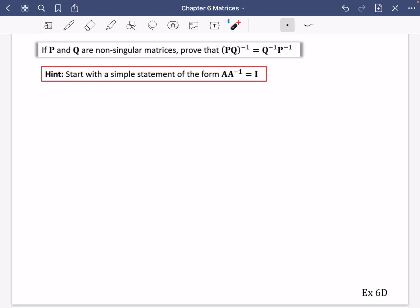So always for these kinds of things, start off with a really simple form, a simple statement of the form A multiplied by A inverse equals I. So for this one, that simple statement that we would have to begin with would be PQ multiplied by PQ inverse is equal to I. That's our simple statement to begin with. Now, what this really means, this means P multiplied by Q multiplied by PQ inverse is equal to I. That's really what this expression is actually saying here.